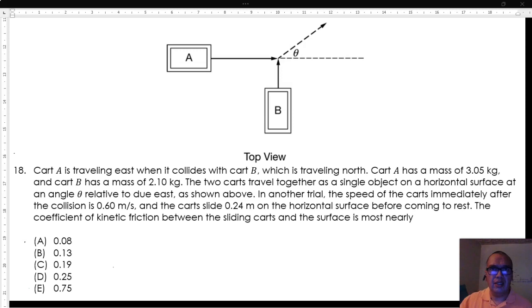In another trial, the speed of the carts immediately after the collision is 0.60 meters per second, and the carts slide 0.24 meters on the horizontal surface before coming to rest. The coefficient of kinetic friction between the sliding carts and the surface is most nearly